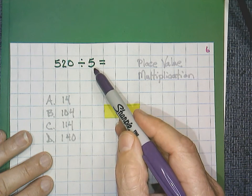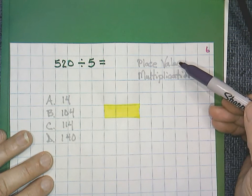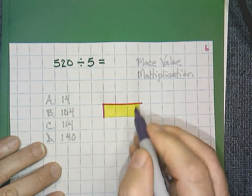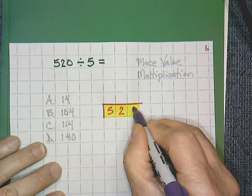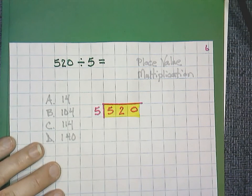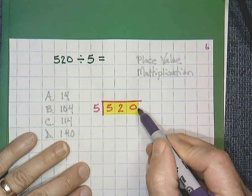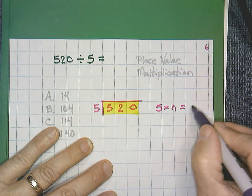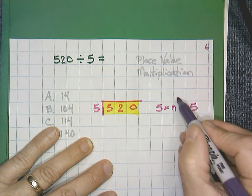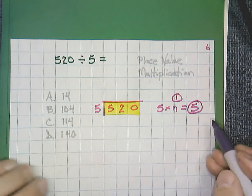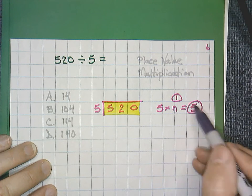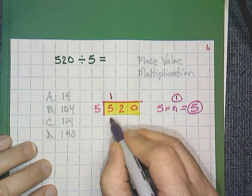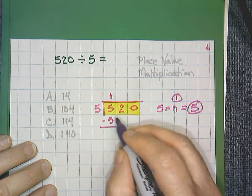520 divided by 5. Our strategy this time is we're going to pay extra close attention to our place value. And let's use multiplication to solve again. 520 divided by 5. We work from left to right. Digit by digit. 5 does go into 5. So I'm going to go 5 times n equals 5. Well, n in this case would be equal to 1. 5 times 1 is equal to 5. I'm going to circle both and use both. The 1, remember, goes over the 5. And this 5 goes under the 5 to subtract. 5 minus 5 is 0.